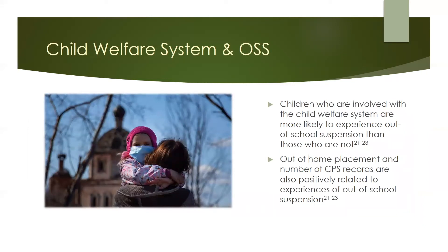Finally, the last disparity that we will discuss in this module is along the lines of the child welfare system. Children who have been involved in the child welfare system, such as their family receiving a report or investigation from Child Protective Services, are more likely to experience out-of-school suspension than those who do not have any such involvement. Specifically, out-of-home placement is highly related to out-of-school suspension, and a higher number of CPS reports was associated with higher levels of out-of-school suspension. So these children who may already be vulnerable in a number of ways are also experiencing the social exclusion and accompanying negative outcomes that go along with out-of-school suspension.